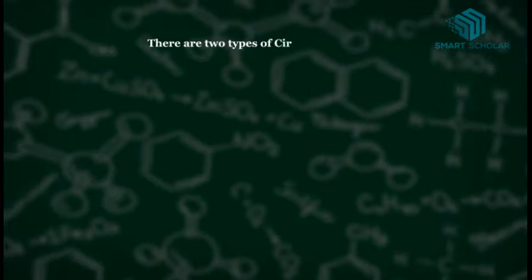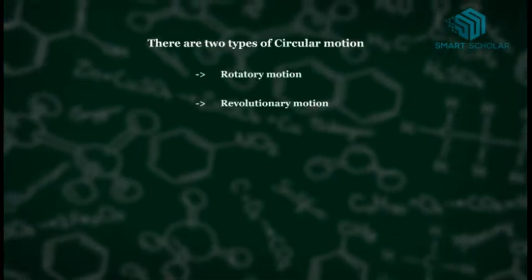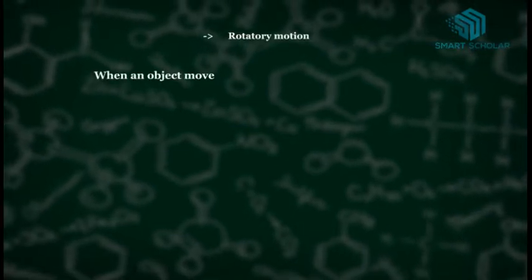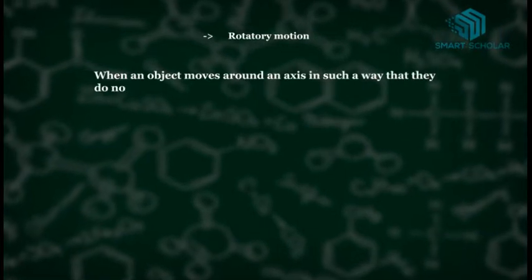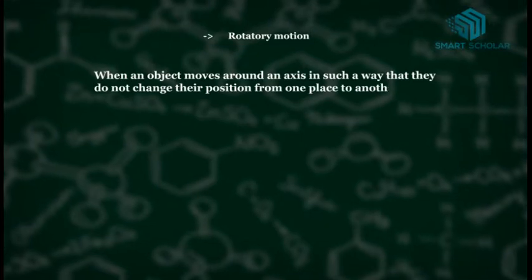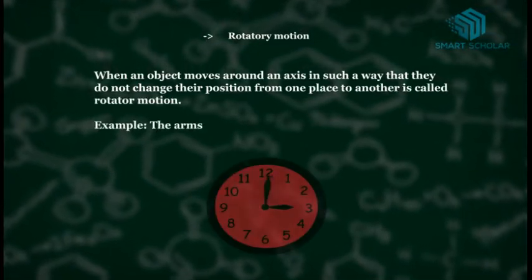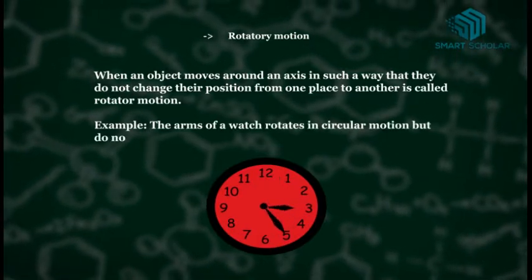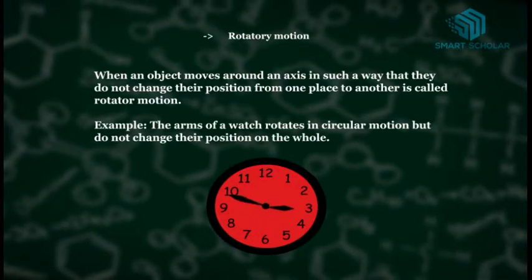There are two types of circular motion: rotatory motion and revolutionary motion. Rotatory motion is when an object moves around an axis in such a way that it does not change its position from one place to another. For example, the arms of a watch rotate in circular motion but do not change their position on the whole.